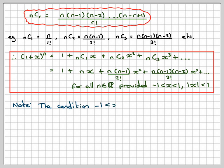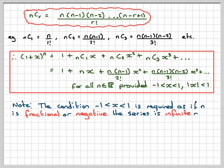Note that the condition -1 < x < 1 is required if n is fractional or negative, because the series is infinite. And this is the condition which will actually ensure that the series converges.